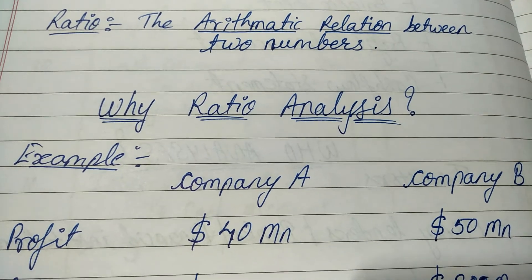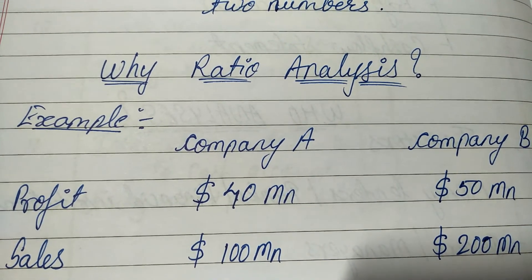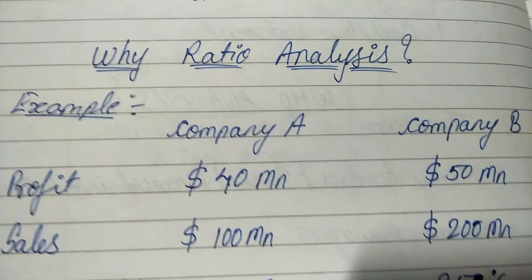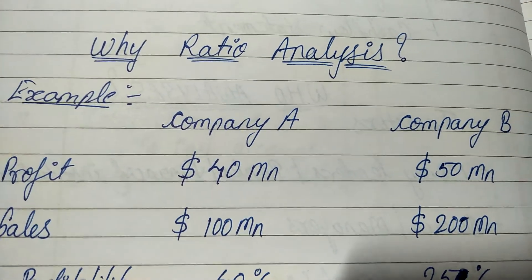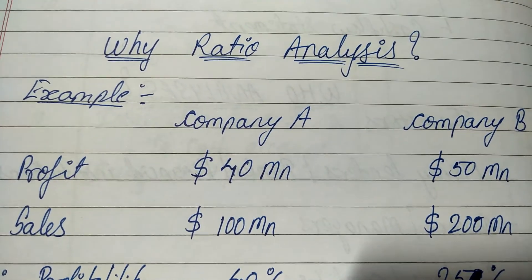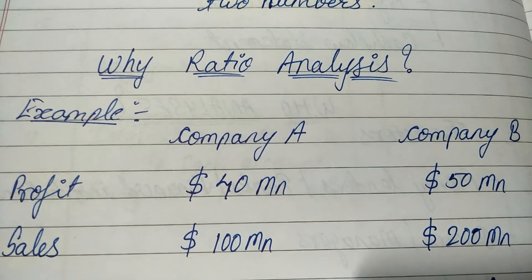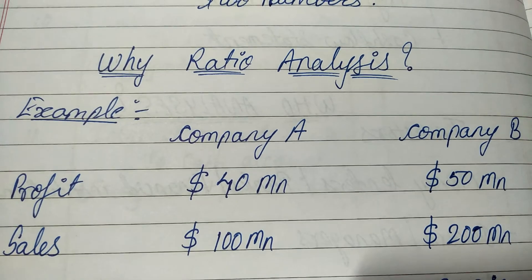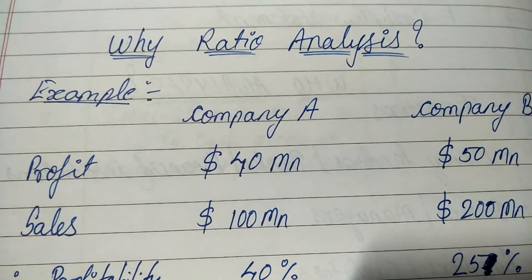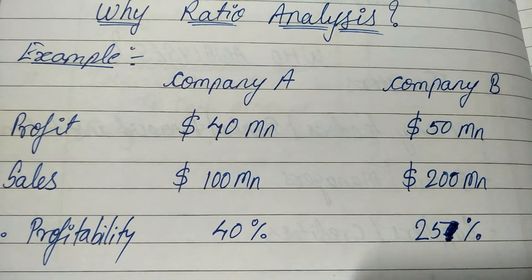If we look further: the sales of Company A were only 100 million dollars, out of which it made a profit of 40 million dollars. The sales for Company B were 200 million dollars, out of which it made a profit of 50 million dollars. So if you take the ratio — for Company A it is 40/100, that is 40%, and for Company B it is 50/200, that is 25%.